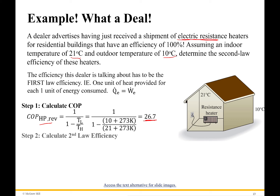So for the best system possible, I could move 26.7 units of heat into my home and it would only cost me one unit of energy. You can already realize the resistance heater is not the most efficient way of heating my house. Since the resistance heater gives one unit of heat for one unit of work, its COP is just one. Comparing that to the best case, my heater is only 3.7% as efficient as it possibly could be.